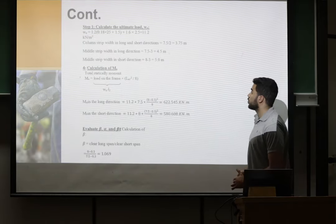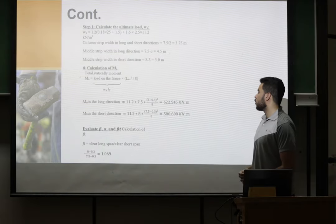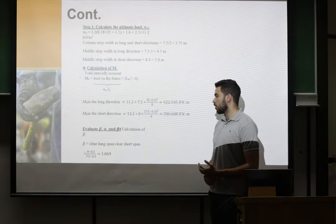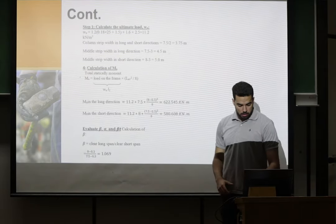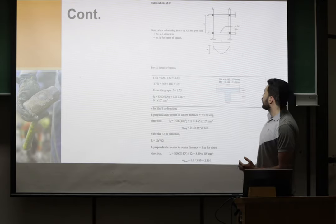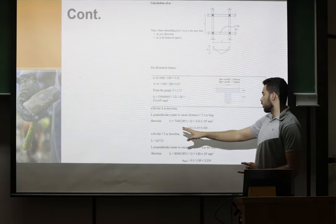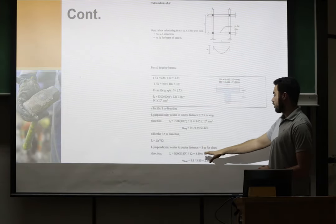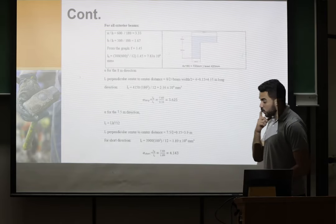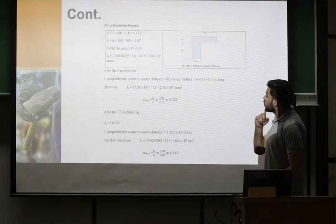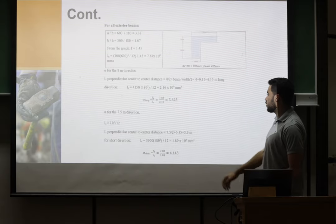We starting by calculating the ultimate load. Then after we find the ultimate load we plug it in moment. Then we find the moment in long direction and short direction. Then we evaluate the beta and alpha and beta T. After that we started to calculate the alpha at the long direction and the short direction to design it. Here as well for the other side we designed for all exterior beams for short and long direction.